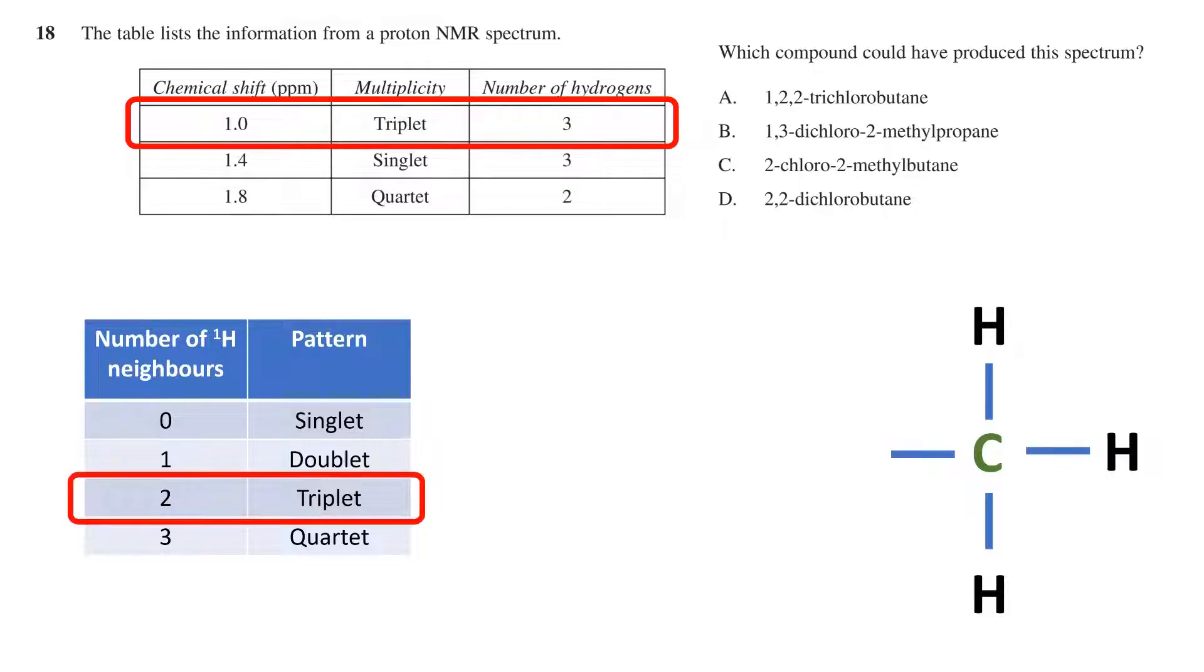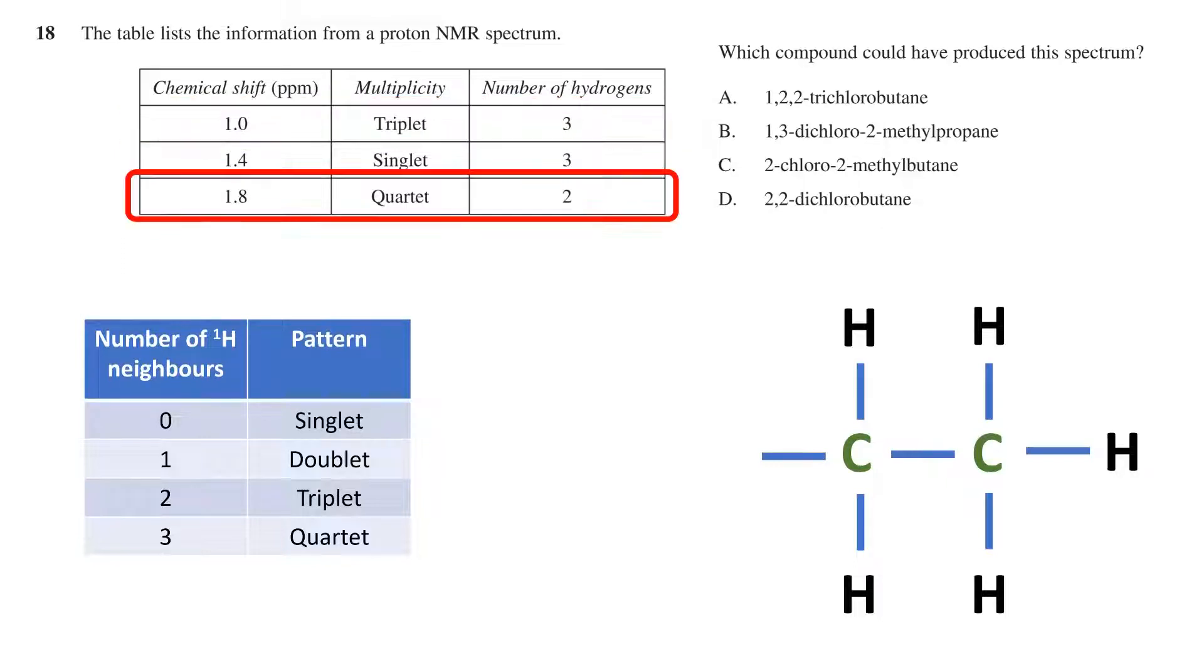Based on our table from before, the triplet signal suggests that this group is connected to a carbon with only two hydrogens. If we draw this in, we now have a slightly different hydrogen environment, and so we need to see if there is a signal corresponding to only two hydrogens. There is,